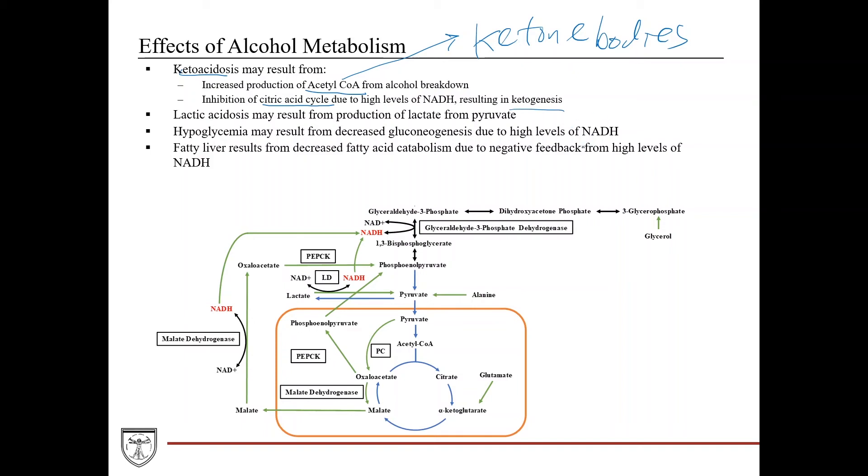And because, remember, the purpose of the citric acid cycle or one of the end products is producing NADH that can then be used by the electron transport chain to produce ATP. And remember, a number of those enzymes in the citric acid cycle actually experience feedback inhibition by high levels of NADH. So you'll decrease the flux of the citric acid cycle. Again, like we said, you can have lactic acidosis from taking this free NADH and converting it into lactate.